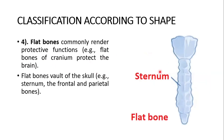Flat bones, like the sternum or chest bone — this is shaped like a sword. They commonly serve protective functions; for example, flat bones of the cranium protect the brain. Examples of flat bones: the vault of the skull, the sternum, and the frontal and parietal bones.